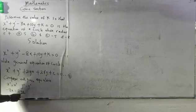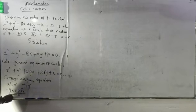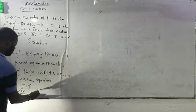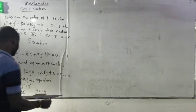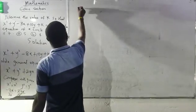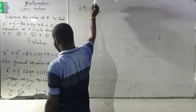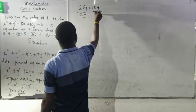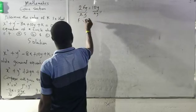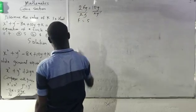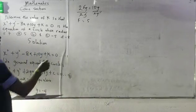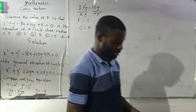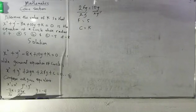Mind you, divide by 2x on both sides. This will cancel, this will cancel. My g will be equals to -4. And also, 10y equals 2fy, so my f will be equals to 5. And the last part, c will be equals to k.